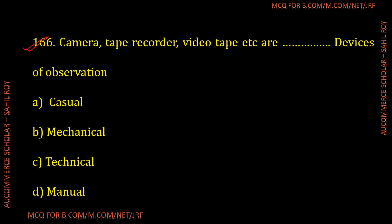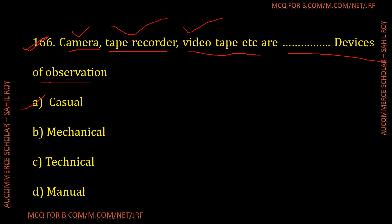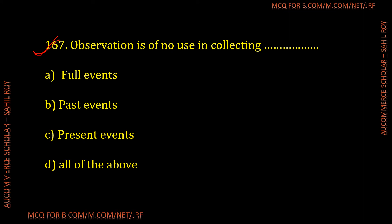Question number 166: Camera, tape recorder, video tape, etc. are what type of devices of observation? The correct answer is mechanical devices of observation — Option B is the correct answer for the given question.